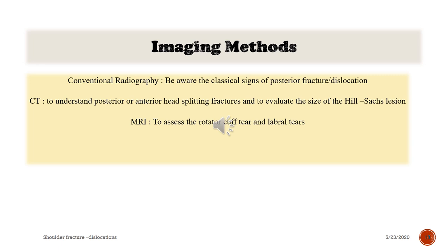Be aware of the critical signs of posterior fracture dislocation on conventional radiography. CT is needed to understand posterior or anterior head-splitting fractures and to evaluate the size of the Hill-Sachs lesion. MRI is used to assess rotator cuff tears and labral tears.